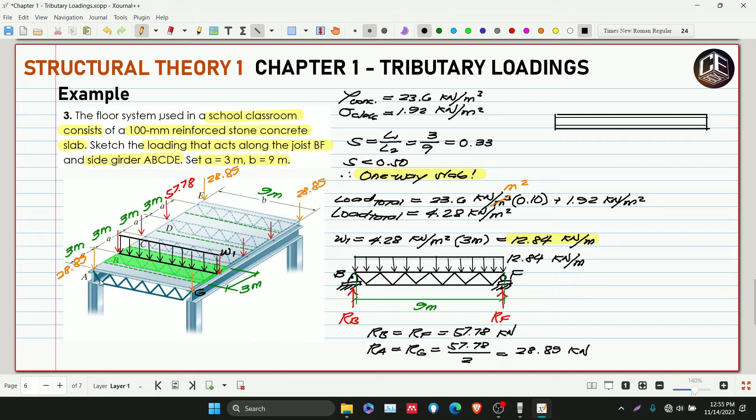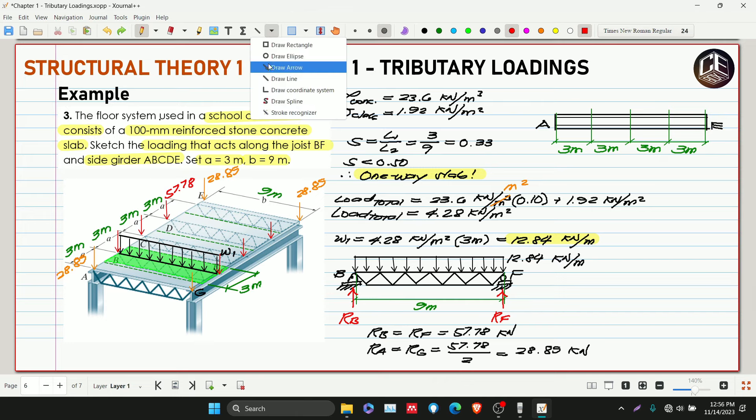This is A and this is E. It's divided into 1, 2, 3, 4 sections. The distance is 3, 3 meters each. These are our loadings, the orange ones here and the red ones.